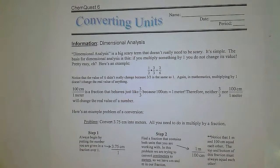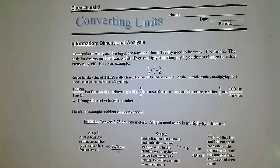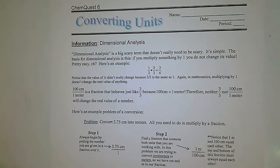100 centimeters over 1 meter is a fraction that behaves just like 3 over 3, because 100 centimeters equals 1 meter. Therefore, neither 3 over 3 nor 100 centimeters over 1 meter will change the real value of a number.